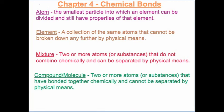An element is a collection of the same atoms that cannot be broken down any further by physical means — so it's a collection of gold, for example. A mixture is two or more atoms or substances that do not combine chemically and can be separated by physical means. A mixture might be a solution or a suspension.